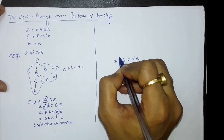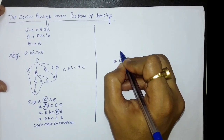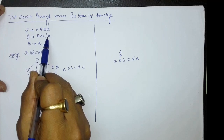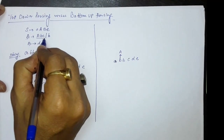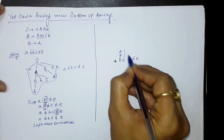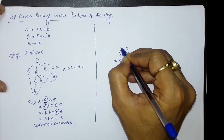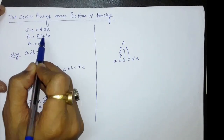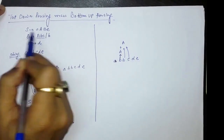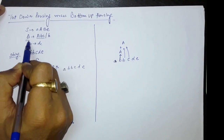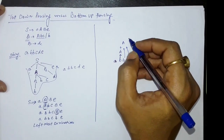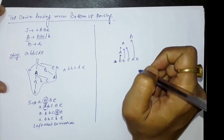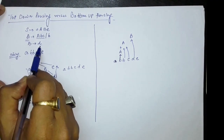Here we first reduce small b to capital A using the production A produces B. Then we have capital A, small b, small c, which we can reduce to capital A using A produces A, B, C — since we found capital A, small b, small c on the right-hand side, we replace it with the left-hand side, capital A. Next, we reduce small d to capital B using the production B produces D.